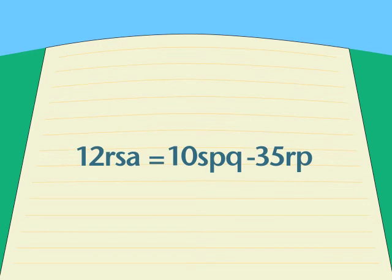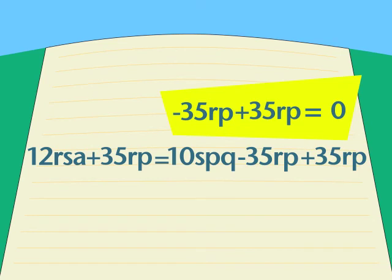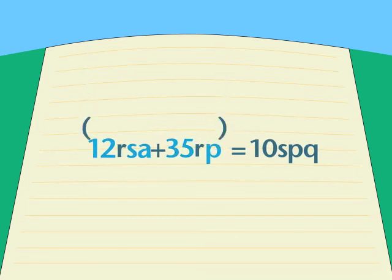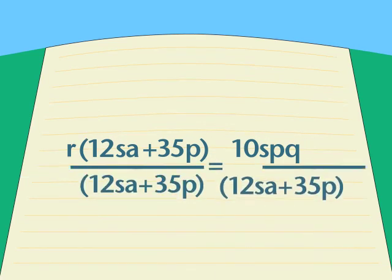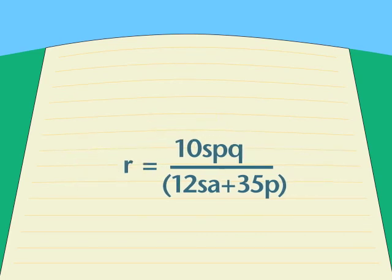Since we're solving for r, we now want to get all the r's together, so we add a positive 35rp to both sides, which leaves us with an r in both terms on the left side and nowhere else. Does this look familiar? Can we put the 12sa and the 35p inside parentheses and pull out the r and put it outside of parentheses? This is the backwards distributive law or factoring at work. We have one last step. How do we get that r all by itself? Division. We divide both sides by 12sa plus 35p. We can now cancel everything out on the left except for the r. And we've got it, the formula for r.